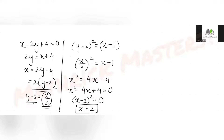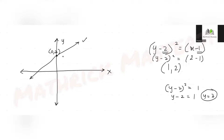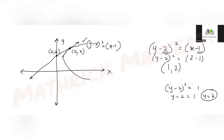With x = 2, substituting back into the parabola equation: (y - 2)² = 2 - 1 = 1, so y - 2 = 1, giving y = 3. The intersection point of the parabola and the line is (2, 3). The parabola has vertex at (1, 2) and passes through (2, 3). Extending horizontally, the point (0, 3) is also noted.